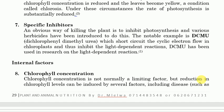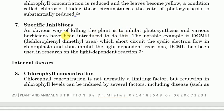Another factor is specific inhibitors. One obvious application is herbicides — specific inhibitors introduced to kill weeds so the crop plant survives. Various herbicides have been introduced to do this. A notable example is DCMU (dichlorophenyl dimethylurea), which short-circuits the cyclic electron flow and affects cyclic photophosphorylation in the chloroplast, thereby inhibiting the light-dependent reaction.